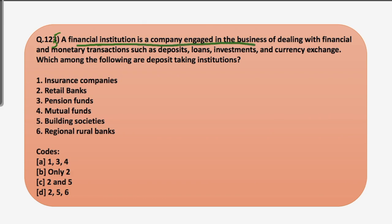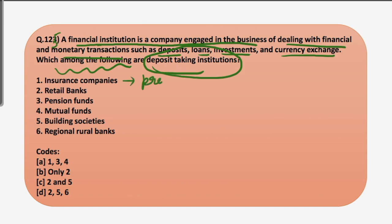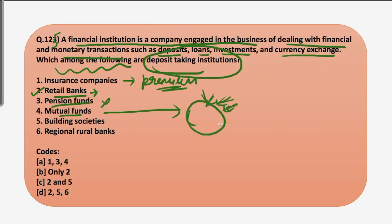The fifth question: a financial institution is a company engaged in dealing with financial and monetary transactions such as deposits, loans, investments and currency exchange. Which among the following are deposit-taking institutions? Insurance companies take premiums from the insured. Retail banks like commercial banks accept deposits. Pension funds do not accept deposits — they are investment pools that pay for employee retirement commitments, funded by employees, employers or both. Mutual funds are professionally managed investment pools that pool money from various investors to purchase securities.